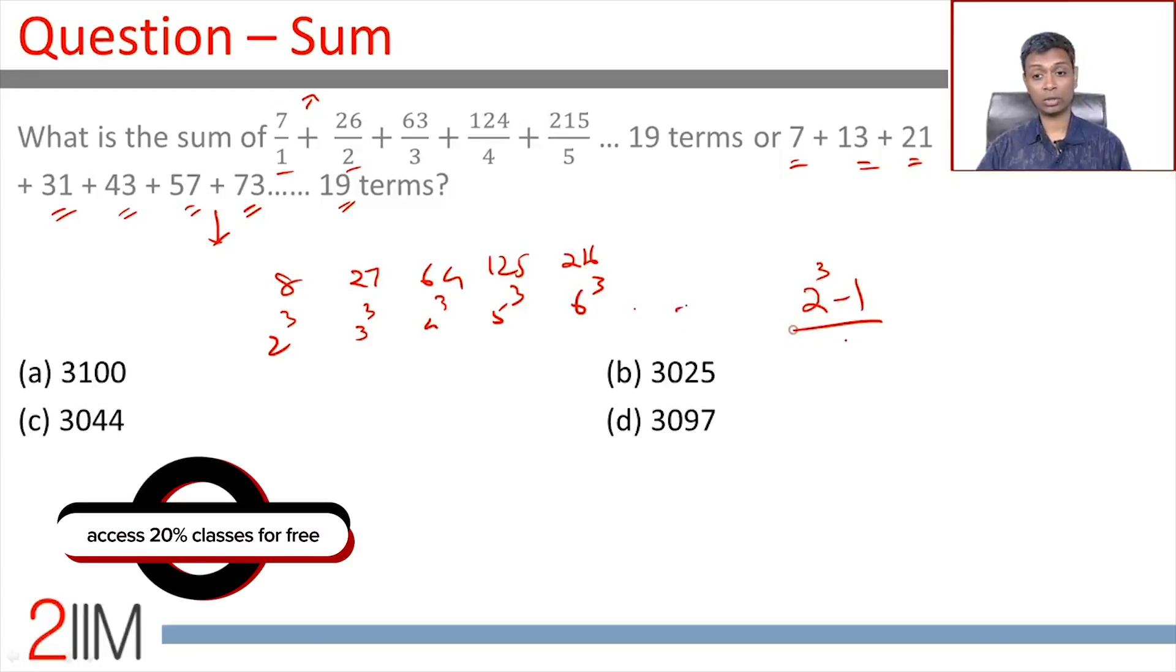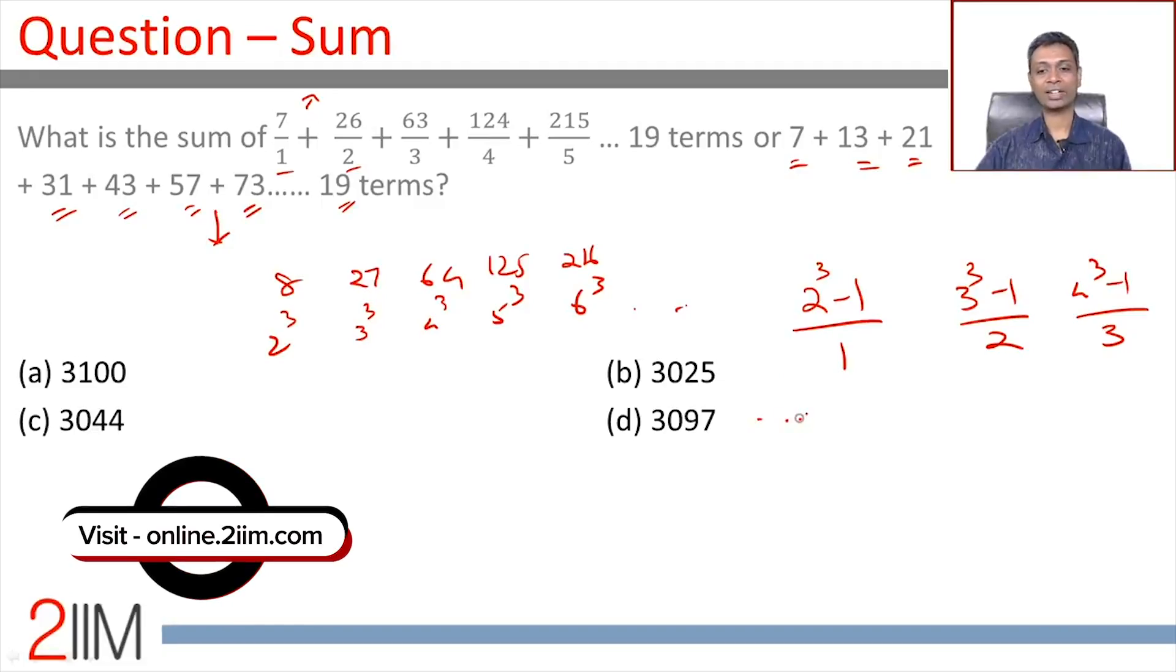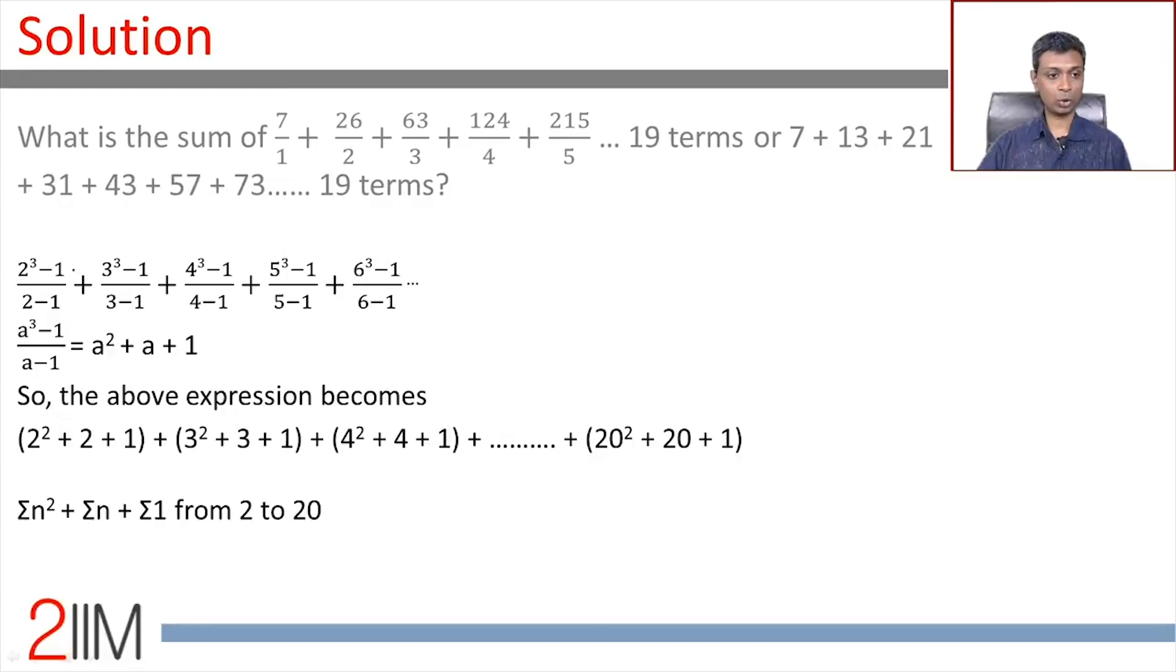This is 2³-1 by 1, 3³-1 by 2, 4³-1 by 3, all the way for 19 terms. Written differently, this is 2³-1 by 2-1, 3³-1 by 3-1, 4³-1 by 4-1 and so on. That is, a³-1 by a-1 or (a-1) times (a²+a+1) by (a-1). That is, a²+a+1 is each term starting from 2 to 20.